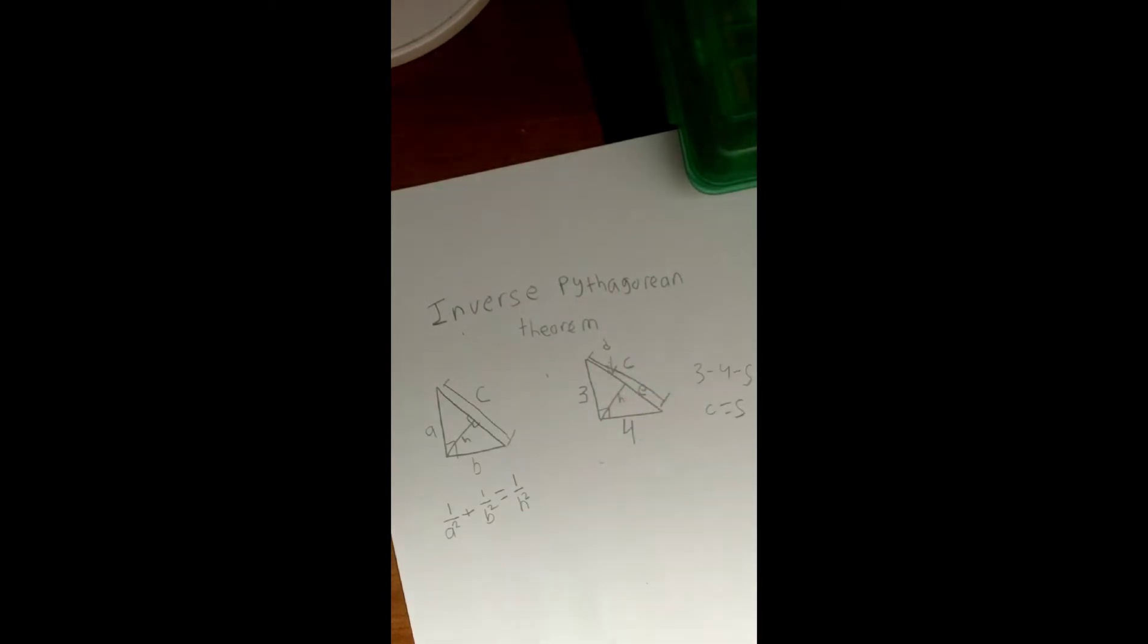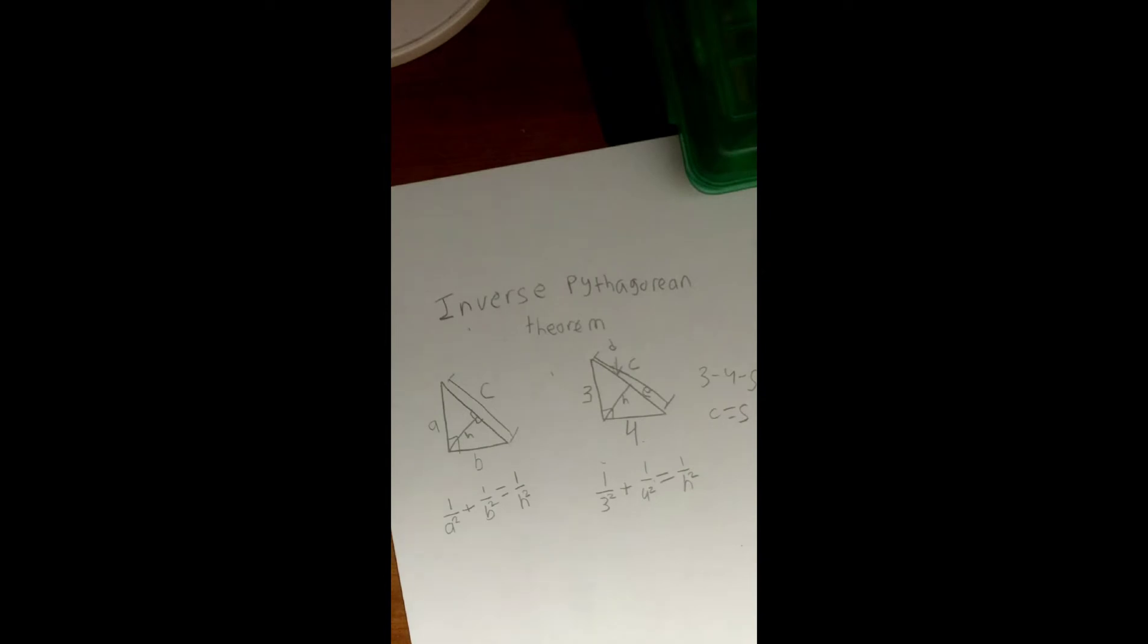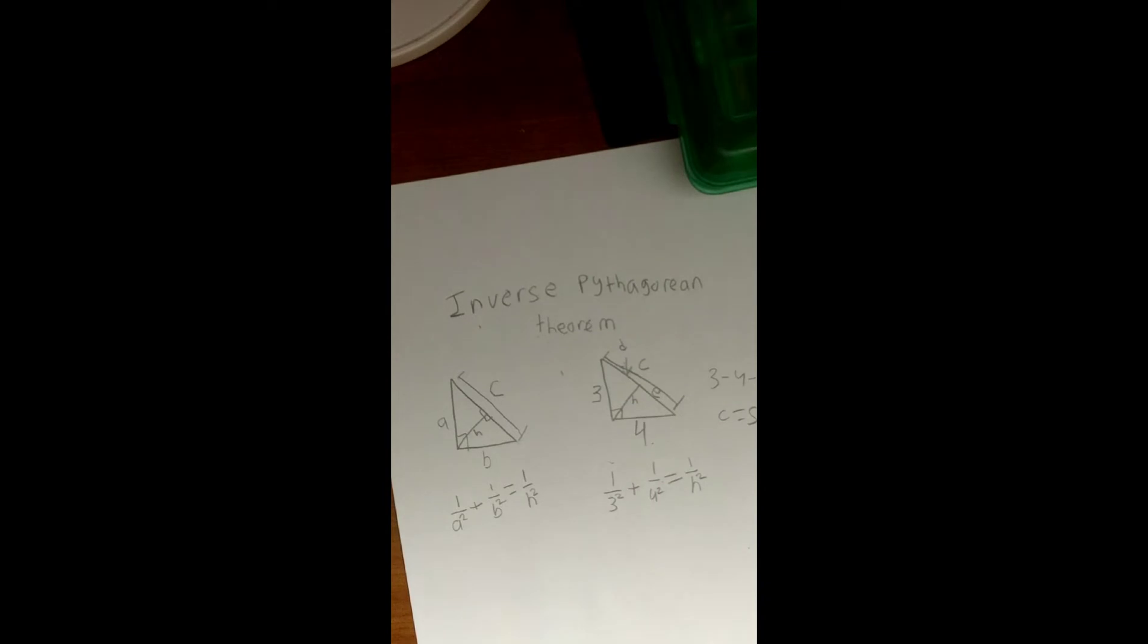So let's start by finding h. 1 over a squared, which is 3 squared, plus 1 over b squared, which is 4 squared, equals 1 over h squared. So because I just put this leg where a is and this leg where b is, just like you would do in the normal Pythagorean theorem.